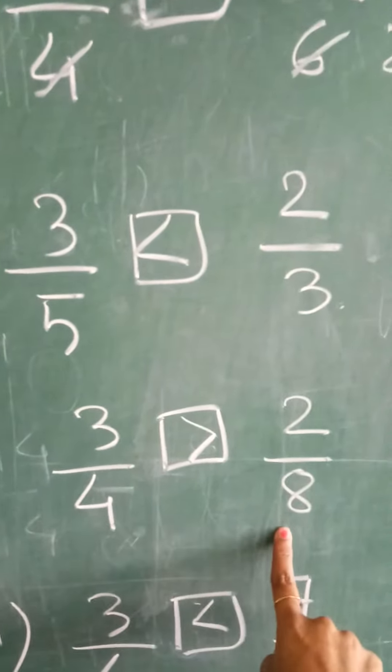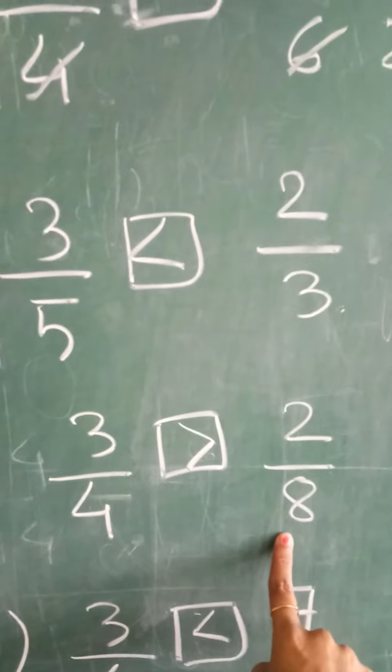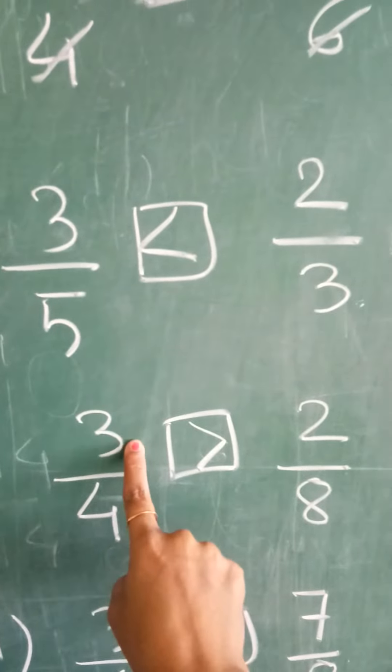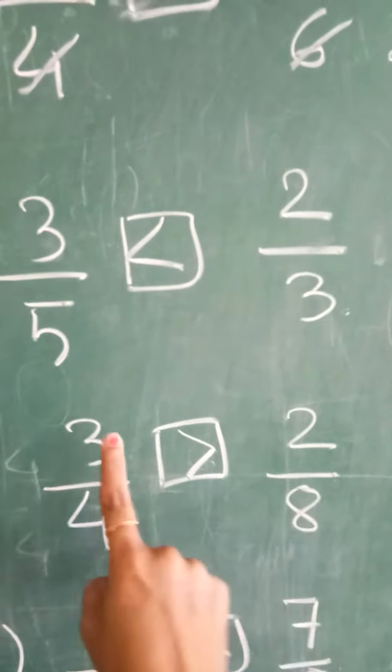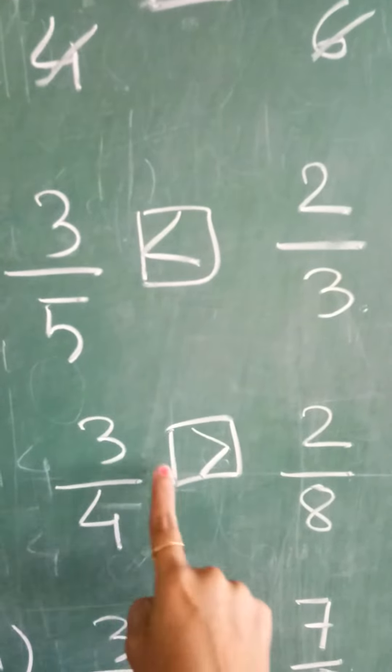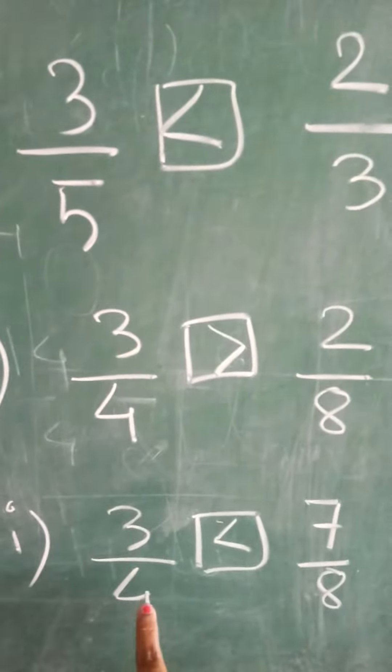3 upon 4, 2 upon 8. Cross multiply: 8 threes are 24, 4 twos are 16. 24 is on this side, so this one will be greater.